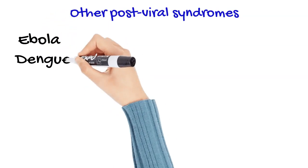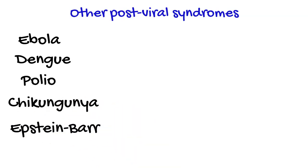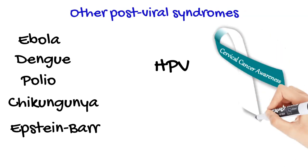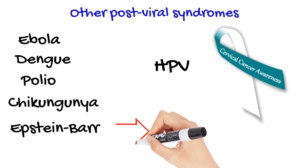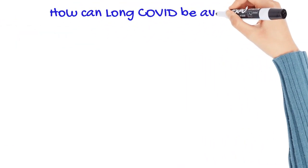Are there any other viruses that cause post-viral syndromes? SARS-CoV-2 joins the list of pathogens that are known to cause post-acute infection syndrome, such as Ebola, Dengue, Polio, Chikungunya, Epstein-Barr virus, and others. People who get infected with human papillomavirus are at greater risk of developing cancer. Virtually all cervical cancers are caused by HPV and cervical cancer can develop years after the initial infection. Similarly, infection with Epstein-Barr virus increases the risk of developing multiple sclerosis later in life.